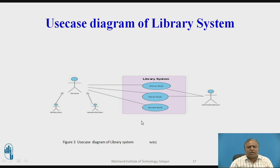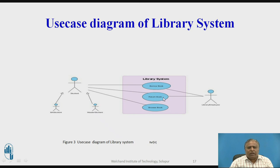This is the use case diagram of a library system, where the book borrower is one actor and the library person is another actor, and this is the system boundary. Use cases include issuing the book, returning the book, and borrowing the book.